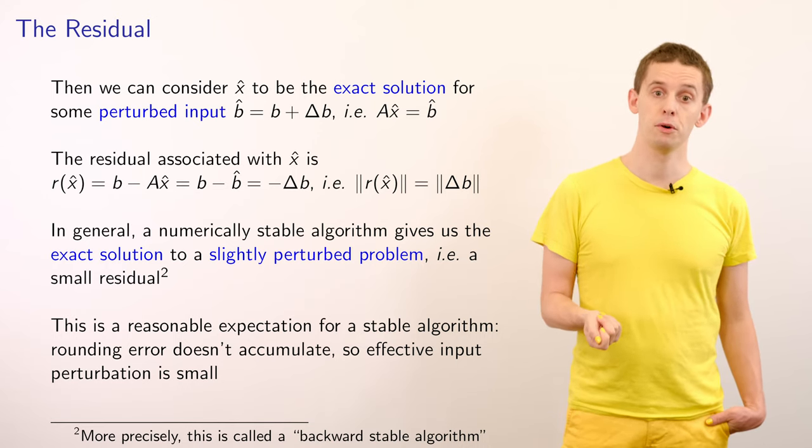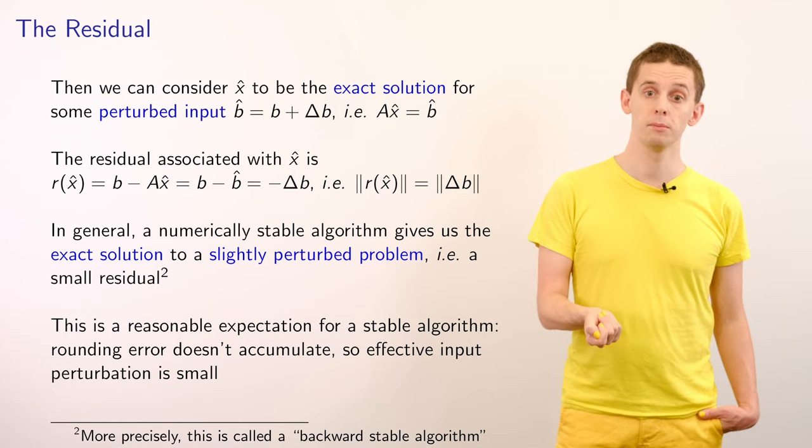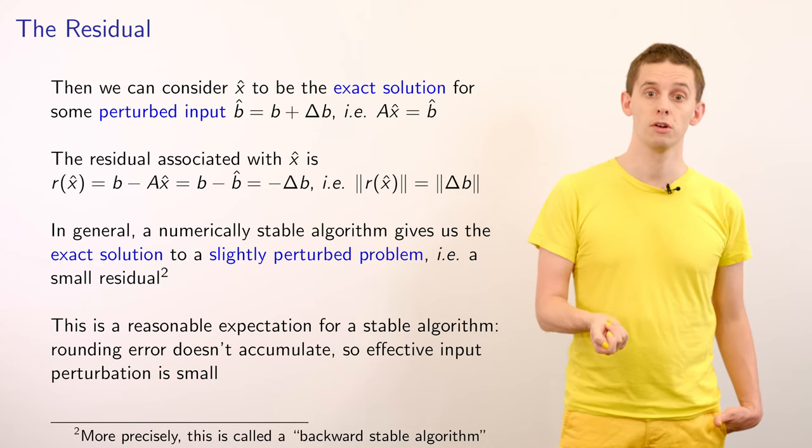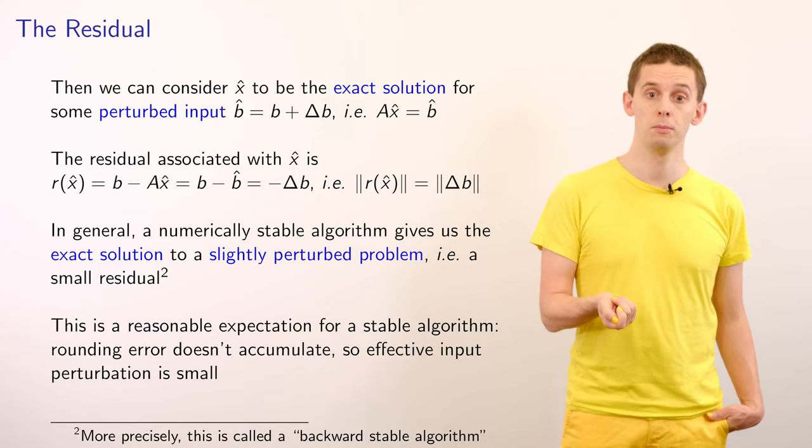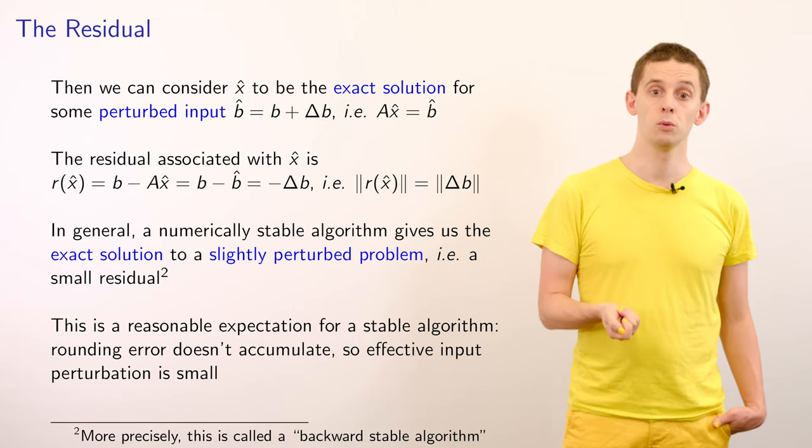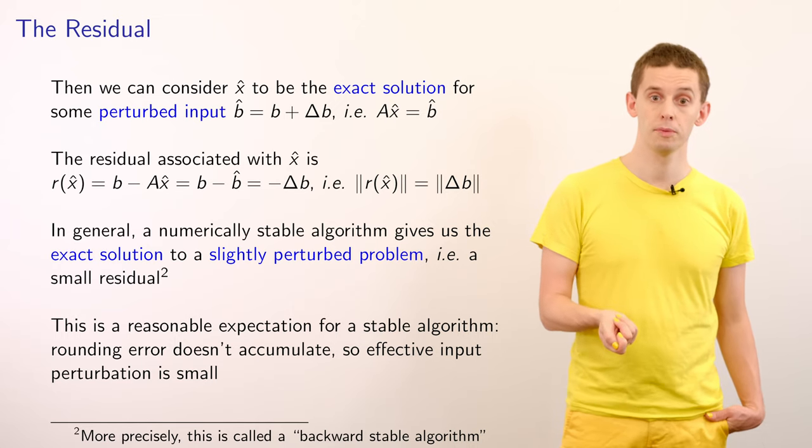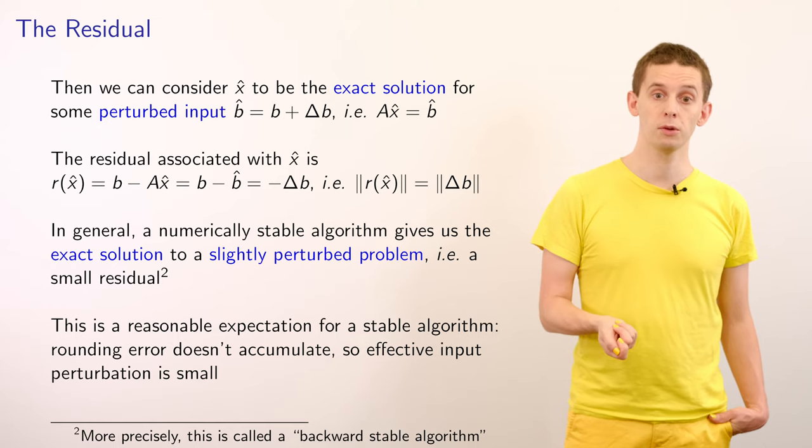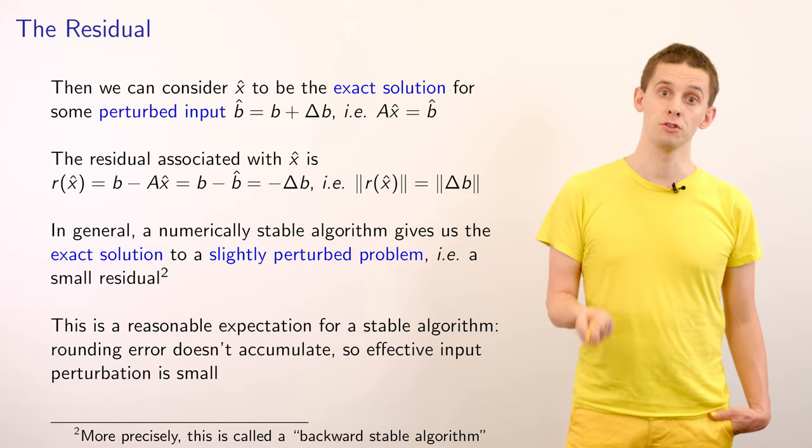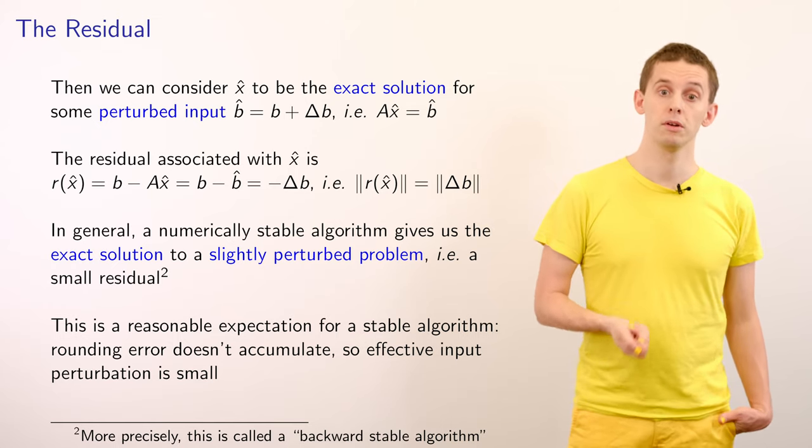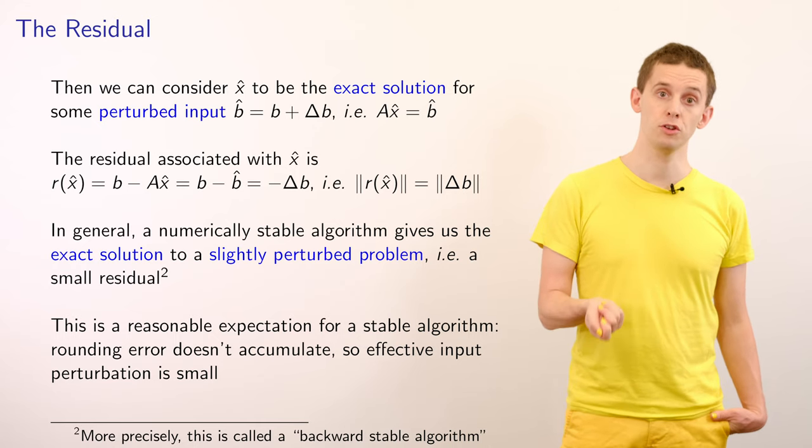So in general, therefore, a numerically stable algorithm should give us the exact solution to a slightly perturbed problem, i.e. we want a small residual. And that's a reasonable expectation for a stable algorithm so that rounding error does not accumulate and the effective input perturbation is small.